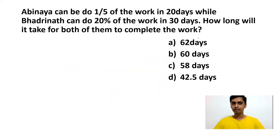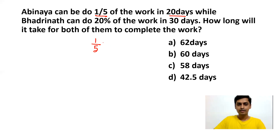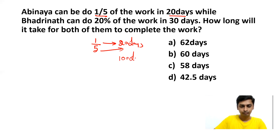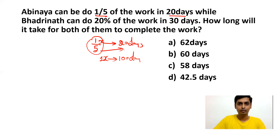The next question is also based on time and work. Abhinaya can do 1/5 of the work in 20 days, while Badrinath can do 20% of the work in 30 days. How long will it take for both of them to complete the work? Since 1/5 is 20%, Abhinaya can complete 1/5 of the work in 20 days, meaning she completes the whole work in 5 × 20 = 100 days.